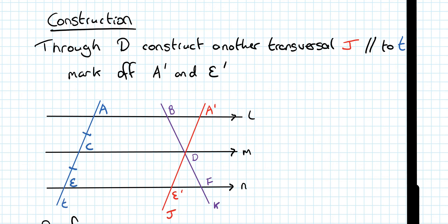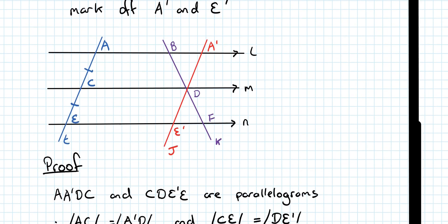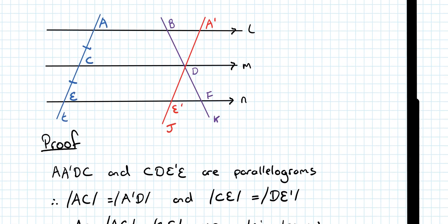Now, the proof, then, is actually quite a very simple proof. If you are looking at the parallelograms A, A prime, D, and C, and the parallelogram C, D, E prime, and E, we know that the length AC, this length, is equal to this length here. And we know that CE, this length here, is equal to D, E prime, is equal to this length here.